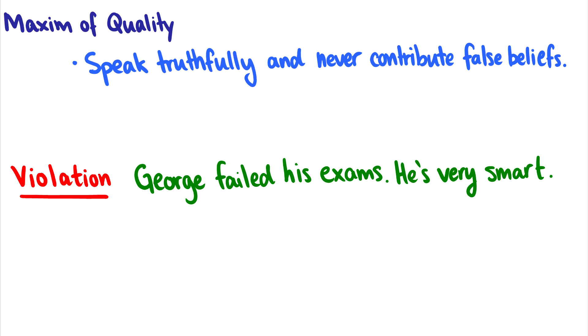But in conversation, we violate this all the time. So for instance, here's a conversation. George failed his exams. He's very smart. Okay, where's the violation?